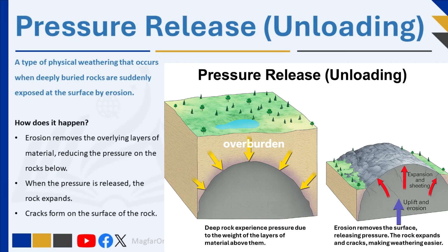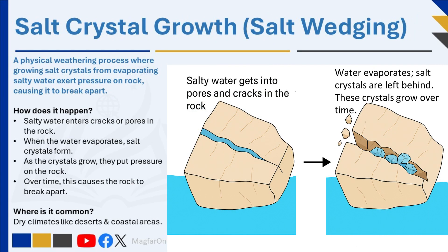We also have pressure release, or unloading, which occurs when deep rocks are suddenly exposed to the surface — for example, after erosion removes the overlying material. These rocks were used to being under great pressure underground; when that pressure is removed, the rock expands and cracks form on the surface, allowing weathering to take place more easily. Salt crystal growth is another type of physical weathering, especially common in coastal or desert areas, where salty water enters the pores or cracks in rocks.